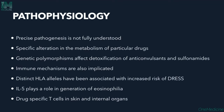The precise pathogenesis of DRESS is not fully understood. Alterations in drug metabolism can trigger DRESS, and genetic polymorphisms affect detoxification of certain drugs like sulfonamides and anticonvulsants, determining which individuals will develop the syndrome. Immune mechanisms are also involved, including HLA allele associations and interleukin-5.